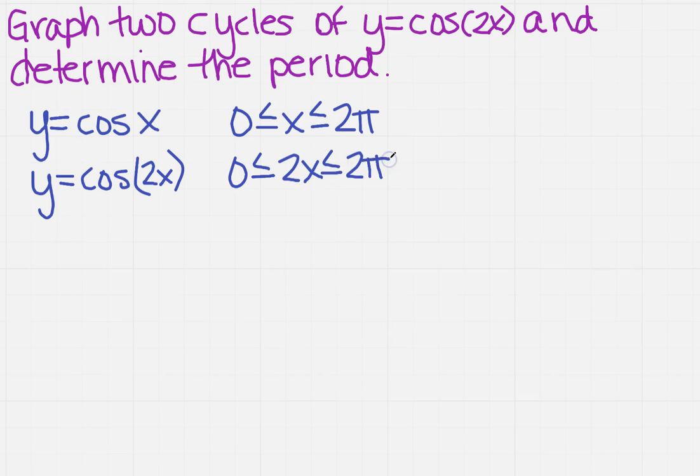So now what do I have to do? You always want to get x by itself. So I need to divide everything through by 2. And I get 0 is less than or equal to x is less than or equal to just π.